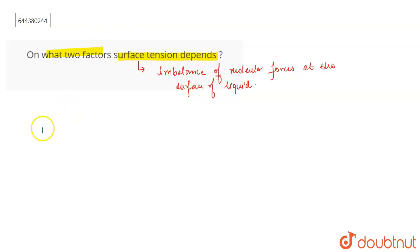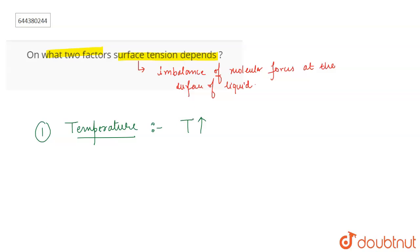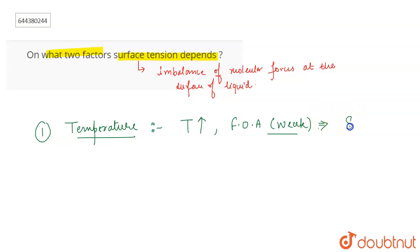The two major factors on which surface tension depends: the first is temperature. As the temperature increases, the intermolecular forces of attraction between the liquid molecules become weaker. As these forces become weaker, the molecules on the surface experience less force and less tension compared to when the temperature was low. This means that as temperature increases, surface tension decreases. Therefore, temperature is inversely related to surface tension.